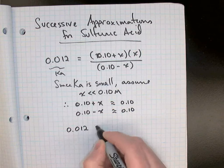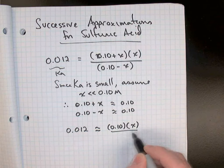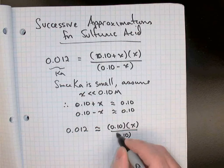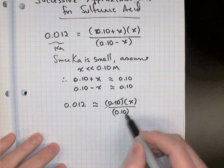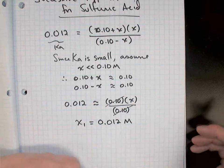Taking both that assumption and using it in the equation above, we can now say that 0.012 is approximately, instead of 0.1 plus X we can just say 0.1, times the X that we didn't change, divided by, instead of 0.1 minus X we can just say 0.1. Now when you look at that, you realize that's very easy to solve because the 0.1's cancel. So we can say our first approximation in this case is equal to 0.012 molarity, and that was pretty easy.